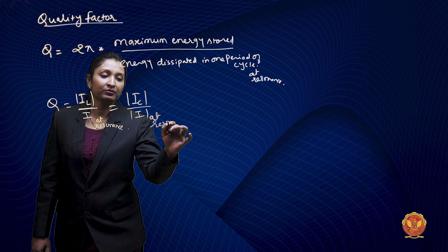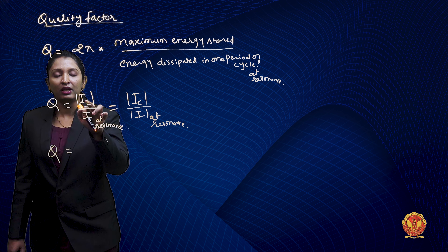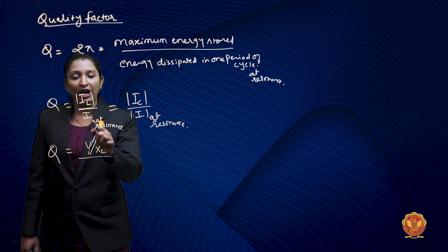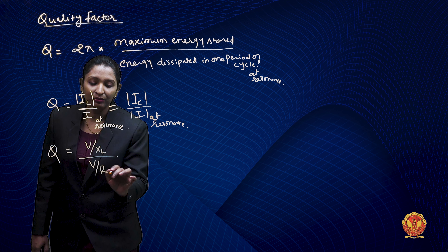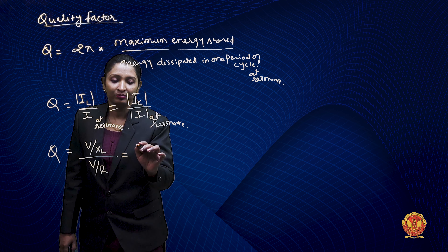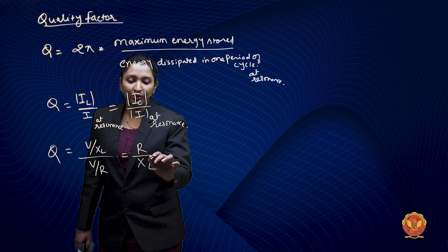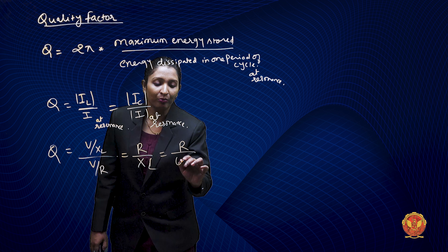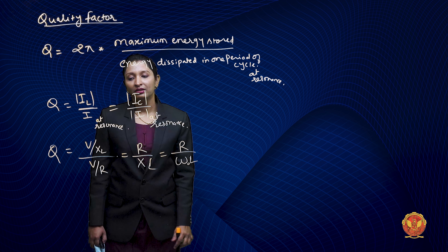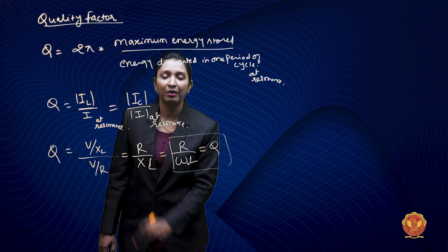How much energy is dissipated in one cycle? The quality factor is maximum energy stored divided by energy dissipated in one cycle. We remember in series resonance, Q is equal to VL upon V. What will happen here in parallel? It is IL upon I — magnitude of IL upon I — which is also equal to IC upon I. We talk about current because in parallel, current is different, whereas in series, voltage is different.